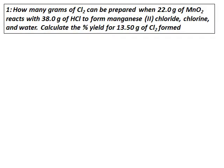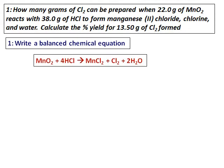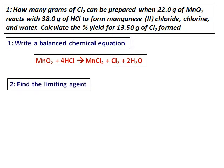We have to find out the grams of chlorine that can be prepared from 22 grams of MnO₂ that reacts with HCl to give manganese chloride. We are also asked to calculate the percentage yield. The first step is to write a balanced chemical equation: MnO₂ plus HCl gives MnCl₂ plus Cl₂ plus H₂O. Putting 4 in front of HCl balances the whole equation.